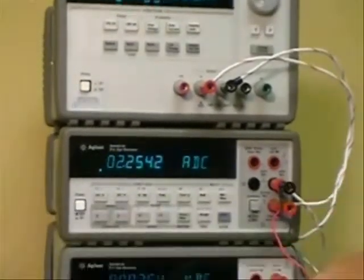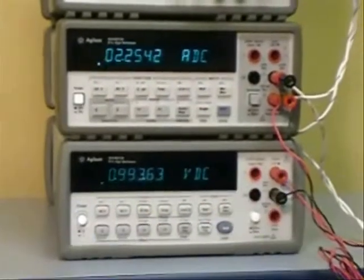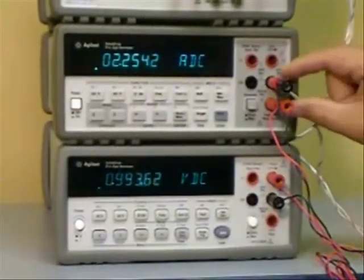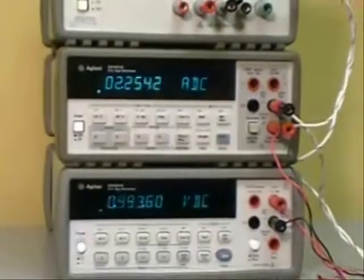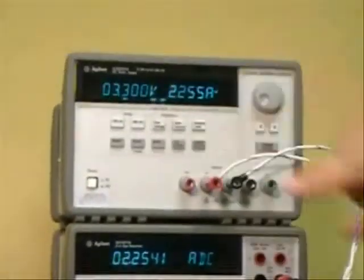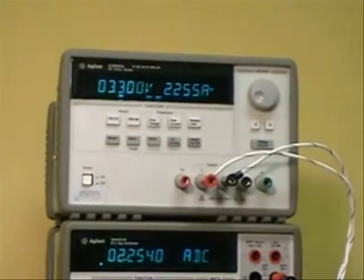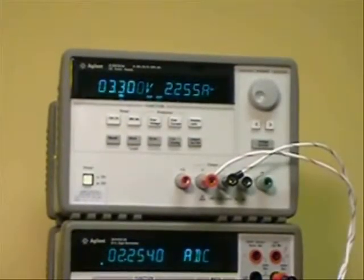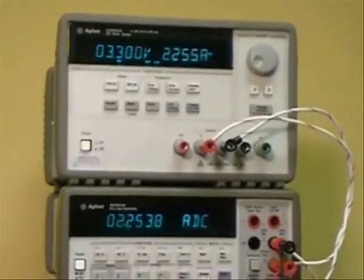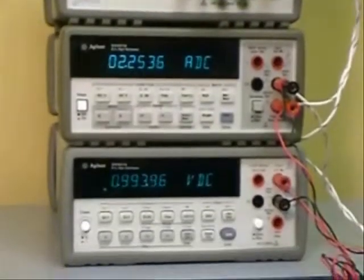So what's happening here is you can see on the bottom DMM it actually drops almost a volt across the DMM. Now we have a one ohm load in the circuit here and it's 3.3 volts being applied and you can see the current is actually about an amp below what it should be. That's because this other volt is being dropped by the DMM shown here.